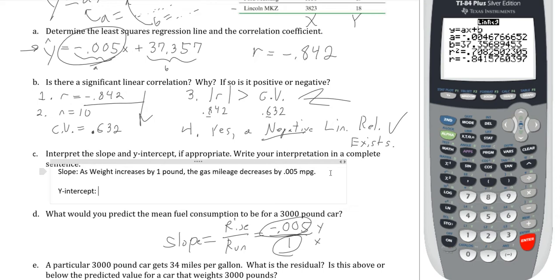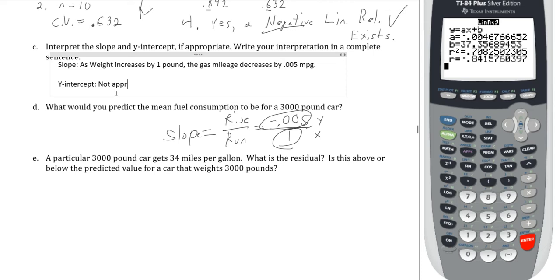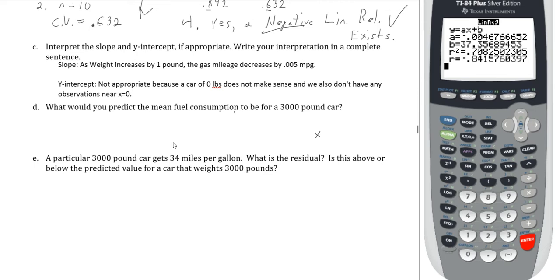For the y-intercept: we need to check if x equals zero makes logical sense and if we have observations around it. X is weight, so we ask: does a car of zero pounds make sense? The answer is an obvious no — it does not make sense to have a car that weighs nothing. Also, my observations are all in the thousands, so I don't have any observations even close to zero pounds. Therefore, the y-intercept is not appropriate.